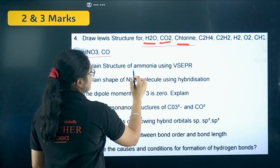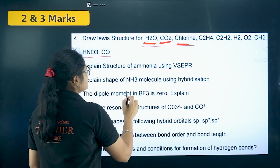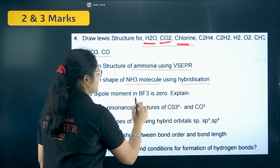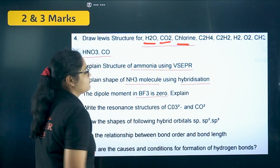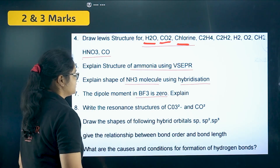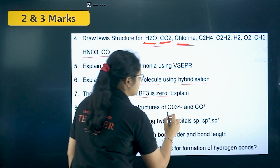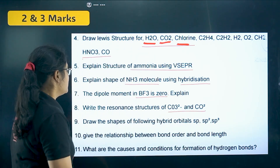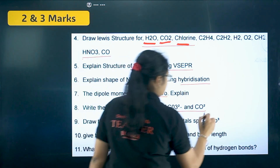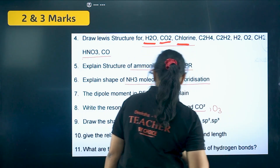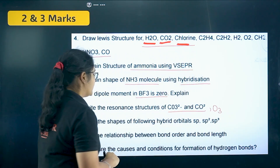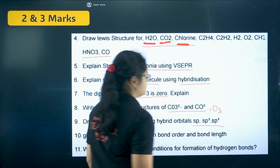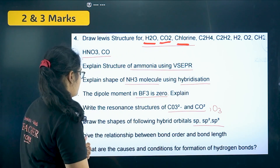Next, the shape of ammonia (NH3) using VSEPR theory and using hybridization. Why is the dipole moment of BF3 zero? — very important question. Resonating structures of CO3 2− , CO2, and also ozone. Next, draw the shapes of the following hybrid orbitals: SP, SP2, and SP3.